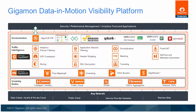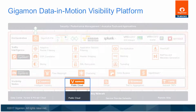The Gigamon Data in Motion Visibility Platform portfolio of hardware and software options provides pervasive visibility across physical and virtual networks, remote site and future SDN NFV production networks, all accessible through the Gigaview FM configuration and management platform. For improved tool performance, GigaSmart technology features provide stateful and packet level optimization and normalization functions. This module describes how the Gigamon Data in Motion Visibility Platform components, including Gigaview V-Series nodes, support features for visibility into the public cloud, in particular Amazon Web Services.